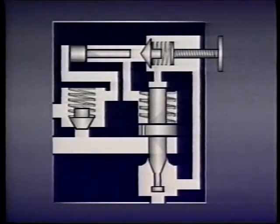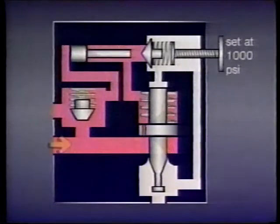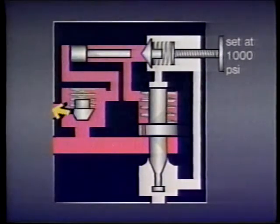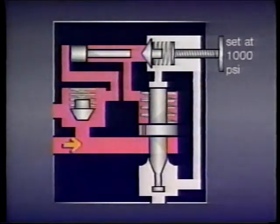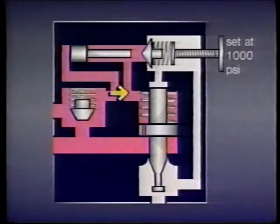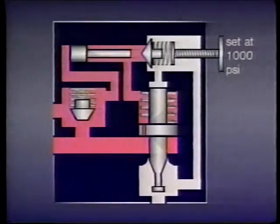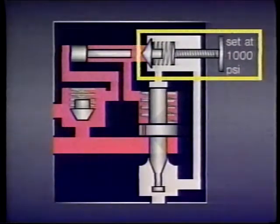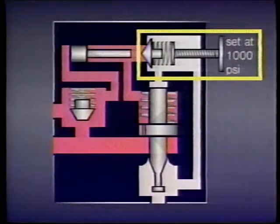Here's how it works. When the accumulator is being filled, flow from the pump — shown in red — goes past the check valve and into the accumulator, filling it with fluid. Fluid at the same pressure also goes through a pilot passage to one end of the differential piston, and through another passage to the other end of the piston and to the face of the dart. In this case the spring tension on the dart has been adjusted so the dart remains seated until pressure rises to 1000 psi.